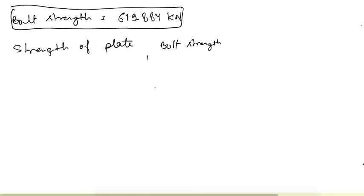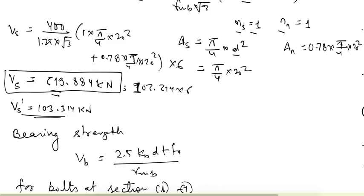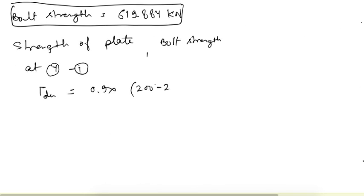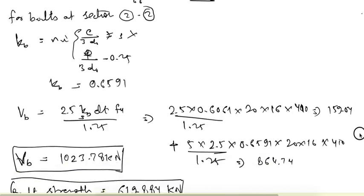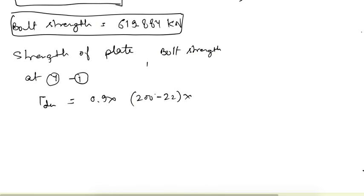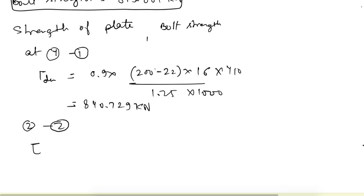At section 1-1, Tdn = 0.9 into AN, where AN = (200 − 1 bolt hole of 22) into thickness 16 mm, multiplied by FU = 410 divided by 1.25 into 1000. This gives Tdn = 840.729 kN.